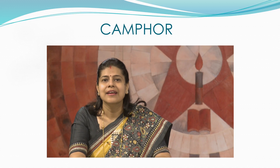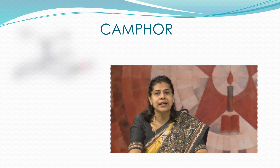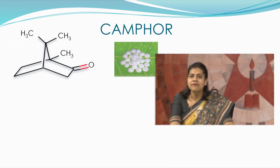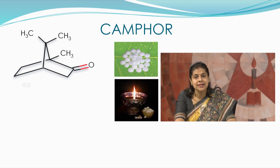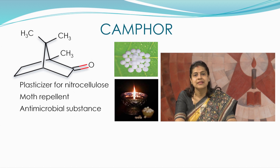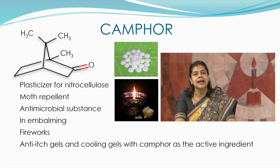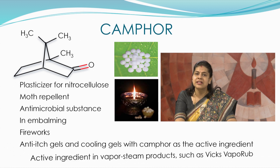You would have heard about camphor. It is a waxy, flammable, white or transparent solid with a strong aromatic odour. It is a terpenoid with the chemical formula C10H16O. Camphor has various uses — it is used as a plasticiser for nitrocellulose, as a moth repellent, as an antimicrobial substance in embalming, and in fireworks. There are anti-itch gels and cooling gels with camphor as the active ingredient. Camphor is also an active ingredient along with menthol in vapour steam products such as Vicks VapoRub. Hindus also use camphor as incense in religious functions.